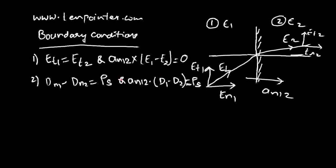ρs is the surface charge density at the interface. When there is charge at the interface, don't think this charge comes from the regions themselves — these regions are dielectrics, meaning insulators, so no charge can be present within them. It is the free charge that we place at the interface separating the two regions, and then we find the relationship between the tangential and normal components of electric field intensity and electric flux density.